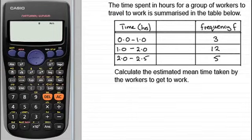Hi there. In this video I want to show you how we can use the Casio range of calculators to quickly work out an estimate for the mean when it comes in a grouped frequency table. To do this I've got this example here where we've got the time spent in hours for a group of workers to travel to work summarized in the table below, and we've got to calculate the estimated mean time taken by the workers to get to work.